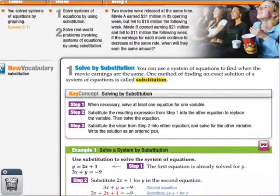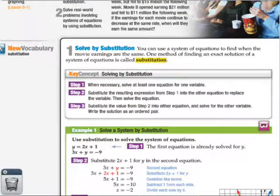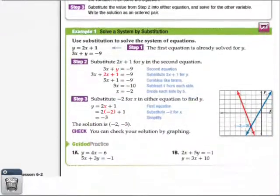The big key is making sure we have the steps down. Step 1: When necessary, solve at least one of the equations for one variable - it doesn't matter which variable. Step 2: Substitute that resulting expression from Step 1 into the other equation to replace the variable, then solve. Step 3: Substitute that value back into either equation and solve for the other variable. Here's what that looks like.